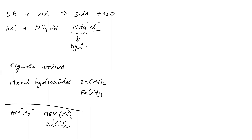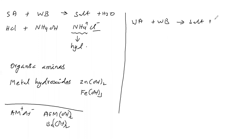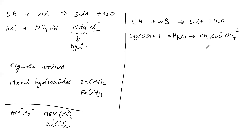Next type of salt: weak acid plus weak base. For example, acetic acid (weak acid) plus ammonium hydroxide (weak base) gives ammonium acetate and water. In this salt, the anion acetate is from weak acid, so it undergoes hydrolysis. The cation ammonium is from weak base, so it also undergoes hydrolysis. Therefore, in this salt both the anion and the cation undergo hydrolysis.